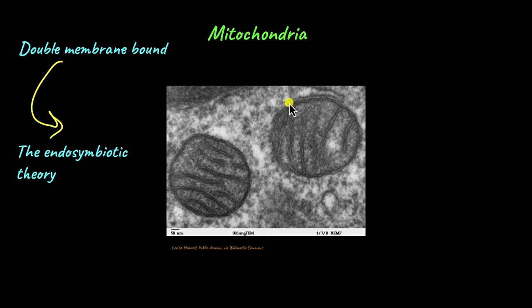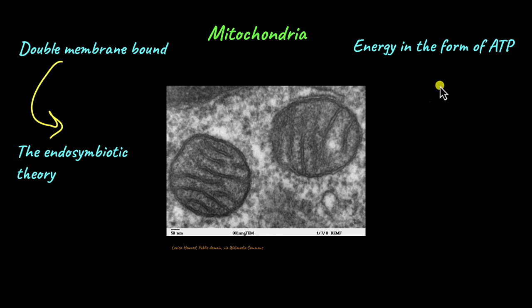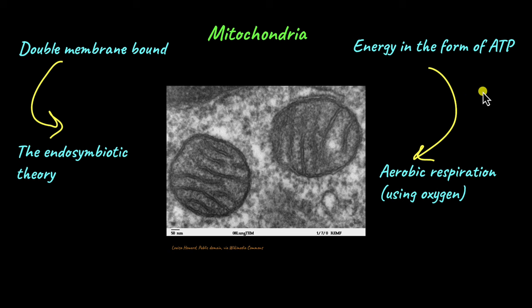The function of the mitochondria in cells is very important. They are involved in producing energy in the form of ATP. ATP, or adenosine triphosphate, is the energy currency of the cell. Mitochondria produce energy by using the food we eat. When we eat food, the digestive system breaks it down into simpler components, specifically glucose. The cells take in glucose and it is used by the mitochondrion to produce energy in the form of ATP in the presence of oxygen. That's why the process by which mitochondrion produces energy is known as aerobic respiration.